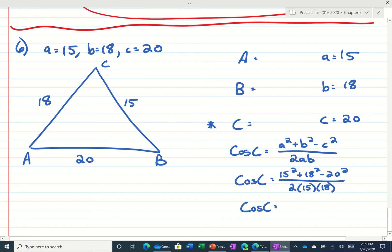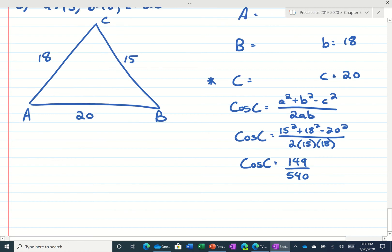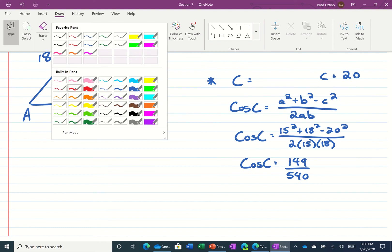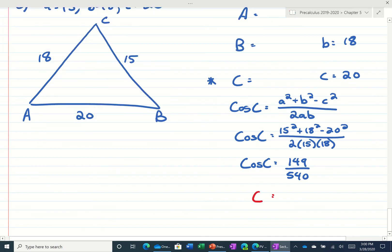Let's see what this is. And 149 over, this is 540. So now what I'm going to do is I'm going to take the inverse cosine of both sides. If I take the inverse cosine of 149 over 540, that tells me 74 degrees.